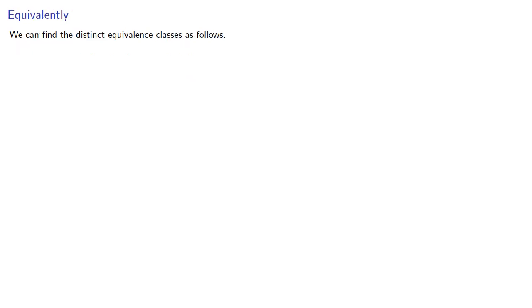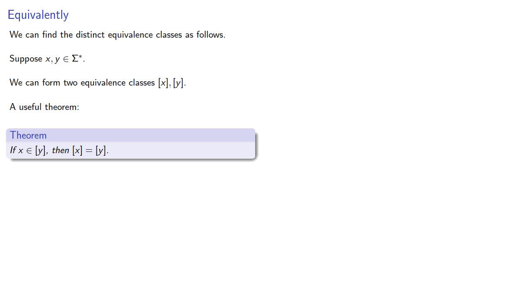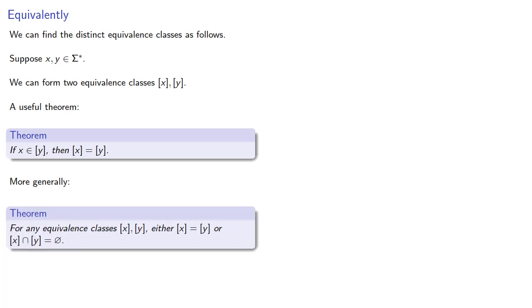We can find the distinct equivalence classes as follows. Suppose x and y are strings. We can form two equivalence classes: the set of strings that are indistinguishable from x, and the set of strings that are indistinguishable from y. Since there are equivalence classes, there's a useful theorem: if x is in the equivalence class of y, then the equivalence class of x is the equivalence class of y. This is a consequence of a much more general relationship — for any equivalence classes, they're either identical or they're completely disjoint.